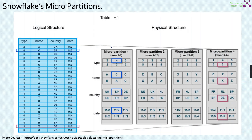Coming to Snowflake's micro partition, this picture is like an encyclopedia for Snowflake — those who practice Snowflake will have seen it many times. This is the logical structure of a table containing four columns: type, name, country, and date. We have 24 records as part of this table. For each record you can see values like 2A, UK, 11/2 and 4C, SP, 11/2.